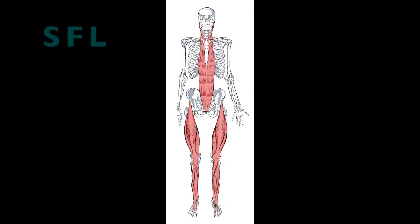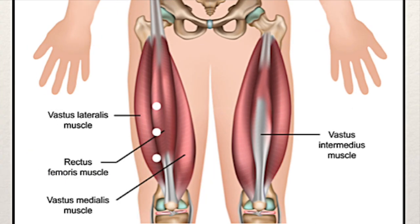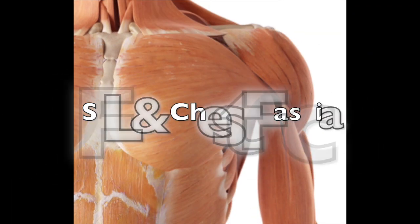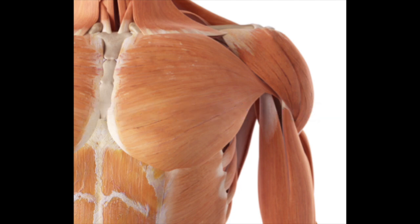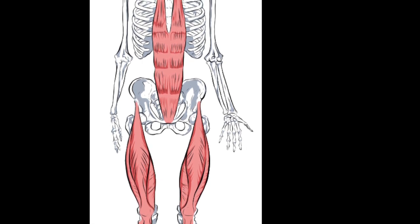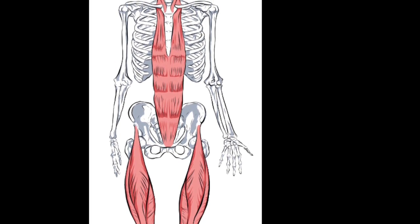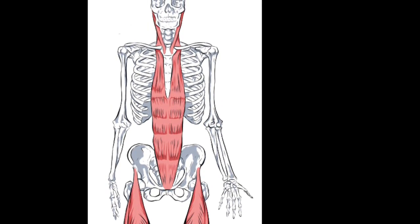Let's take a look at the superficial front line and some of the master Dong points that are located here. We've got the four horses, the four flowers, and the three weights. The four horses are located in the mid-thigh on the stomach meridian, and these connect to the superficial front line and the chest fascia. In the superficial front line image, we see the quads, and moving up they connect to the rectus abdominis and the sternal fascia and the SCM.